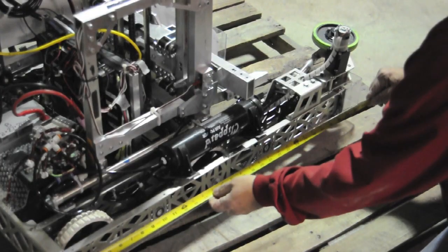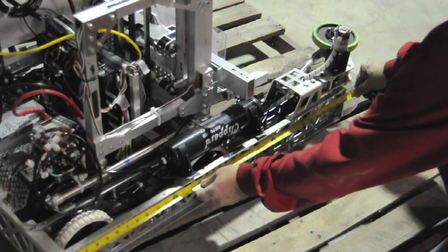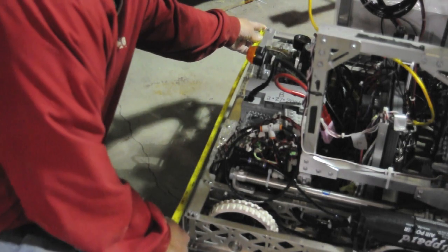The first step is to measure the frame of your robot. Get a measurement for each side that will be protected by the bumpers.